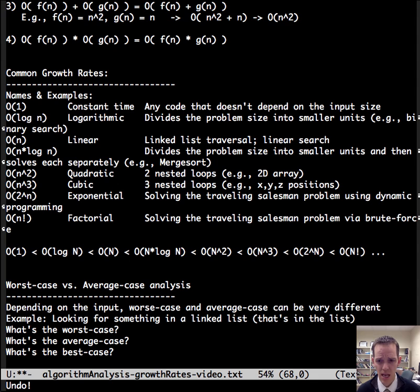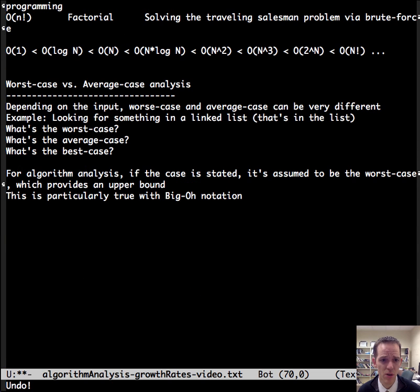For algorithmic analysis, if the case isn't stated, it's assumed that it's worst case, which provides an upper bound. This is particularly true with big O notation.